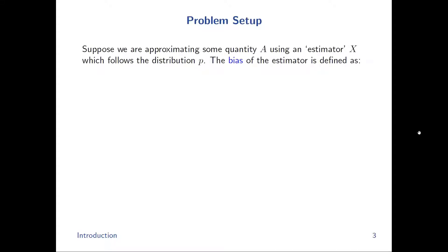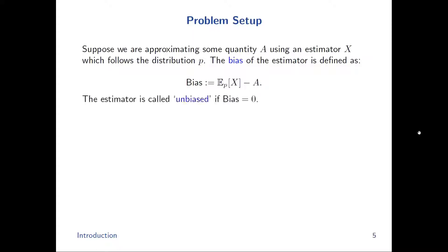Since everything here is about unbiasedness, let me start with defining it. Suppose we have some quantity of interest, call it A — it could be a parameter of a statistical model or an expectation over a challenging probability distribution. We want to estimate this quantity. If our estimator is X with underlying distribution P, then the bias is the difference between the expectation of X and the ground truth A. The estimator is called unbiased if the bias equals zero.